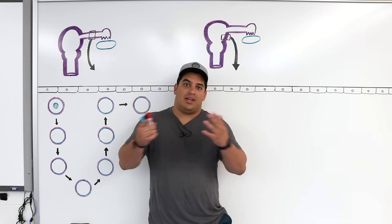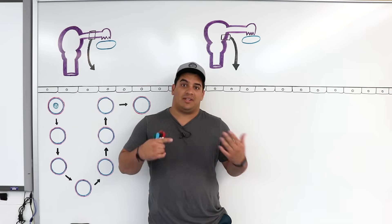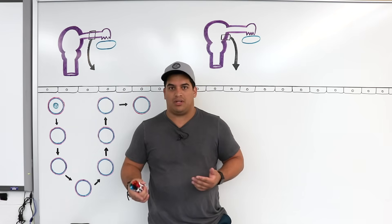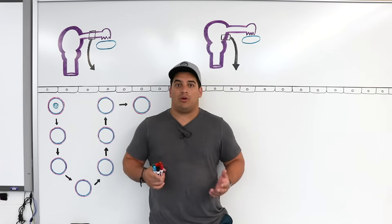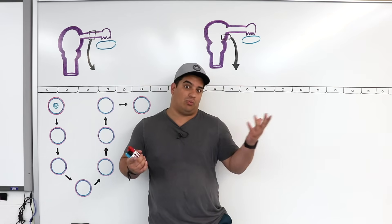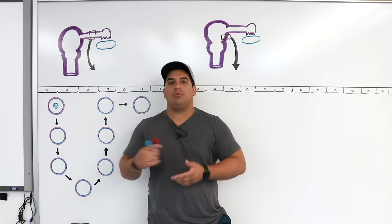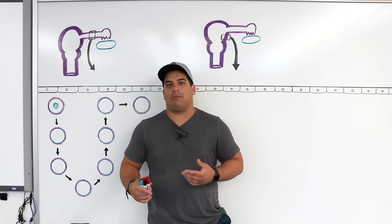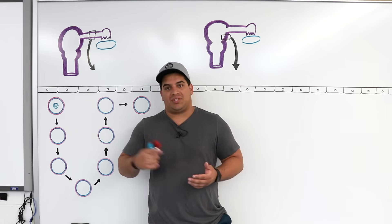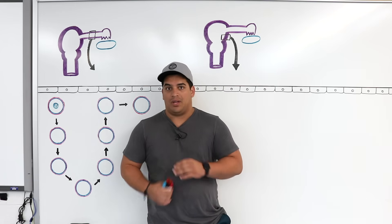After that, we'll go into the next video covering development up until the second week. We're going to go over gastrulation, then we'll have another video on development up to week 3, which involves the neurulation process. Then we'll discuss the formation of the nervous system and just keep going from there until the development of the entire embryo.